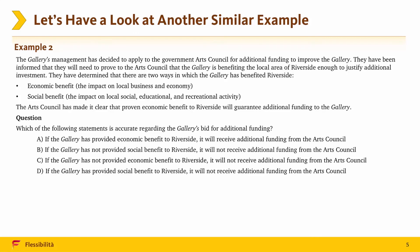Take a moment to think which option is an accurate statement now. This time we notice that proven economic benefit to Riverside is a sufficient, not necessary, condition for funding. That means that presence of economic benefit will lead to additional funding, and this is exactly what option A is saying. And this time, option A is accurate.